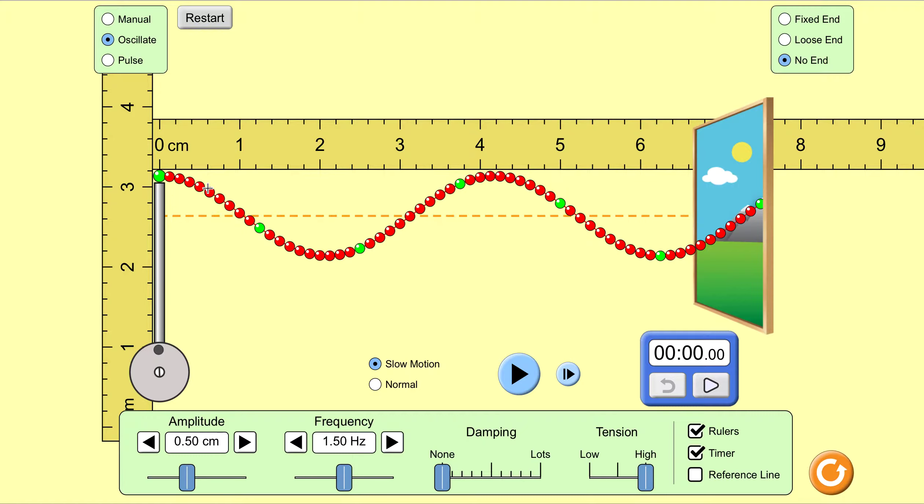Of course it's paused right now so I can draw on here, write on here a little bit and define some terms. A big one and a frequent one you'll hear when it comes to waves clearly is wavelength, which would be a measure of how long the wave is. Basically how long it takes the wave to repeat itself again.